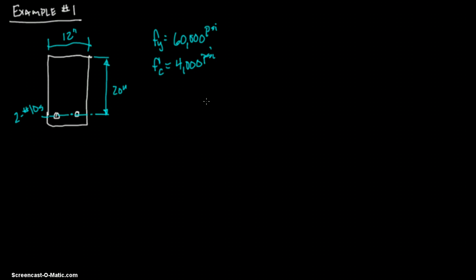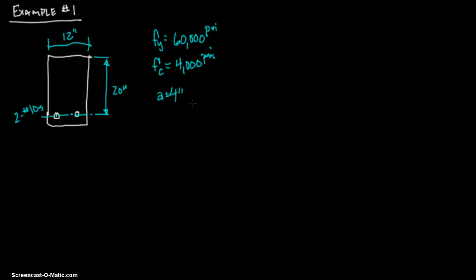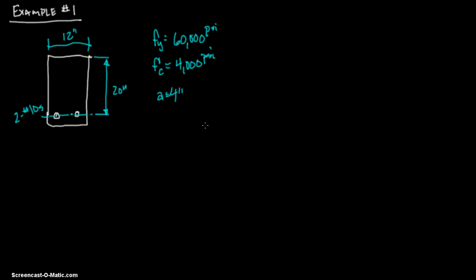And it's asking, what is the moment capacity of the beam shown below? And there's the beam that's shown below. Assume that a equals 4, and we'll go ahead and see what actual a is. And that the reinforcement ratio is less than 0.75% of the balanced design ratio.